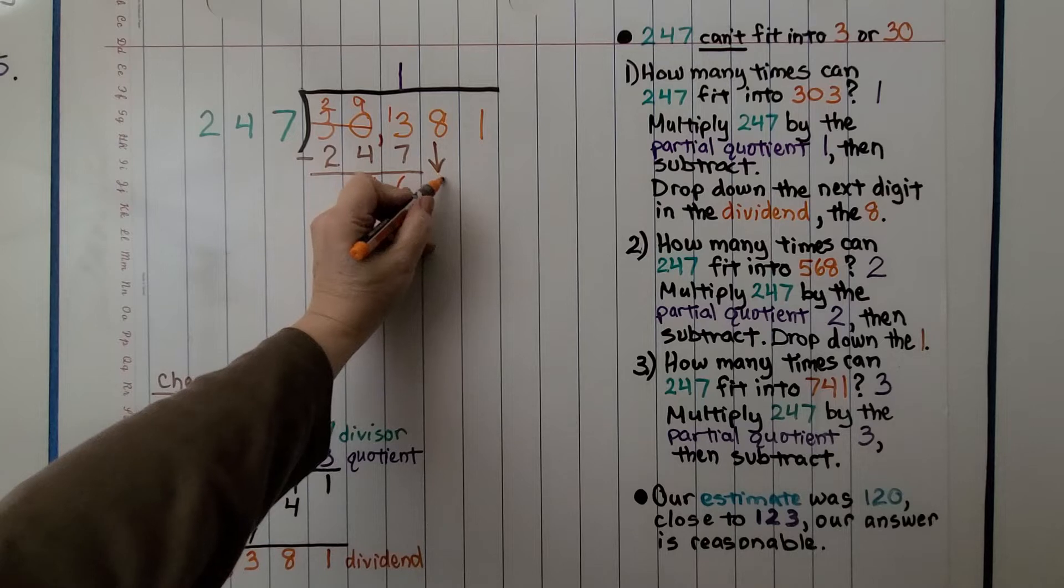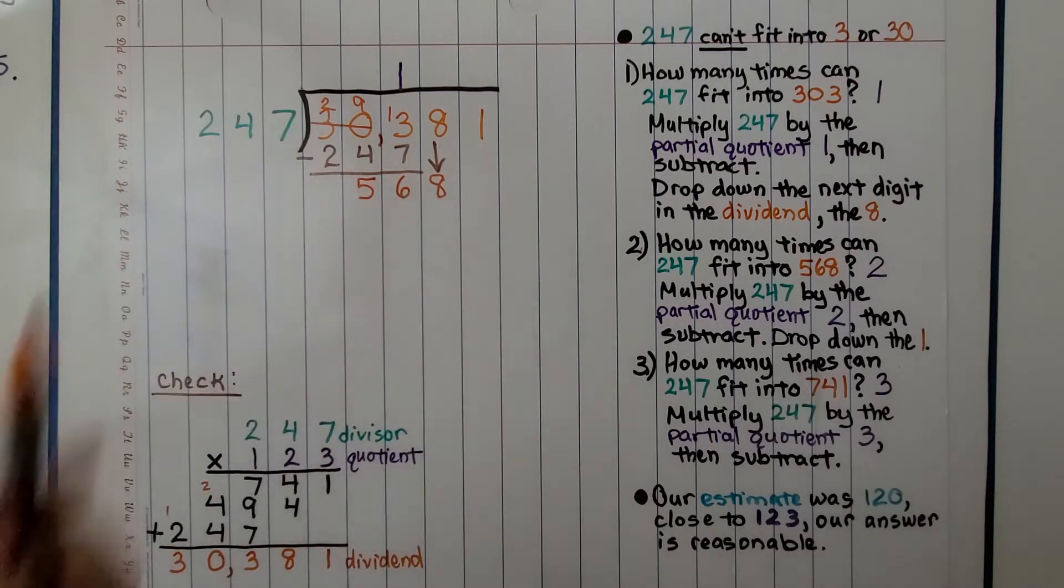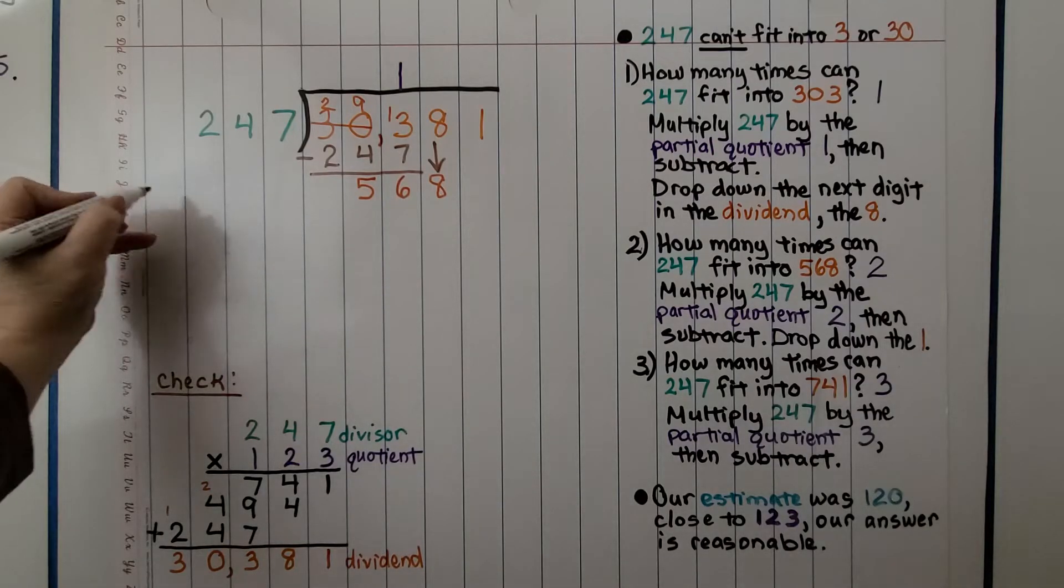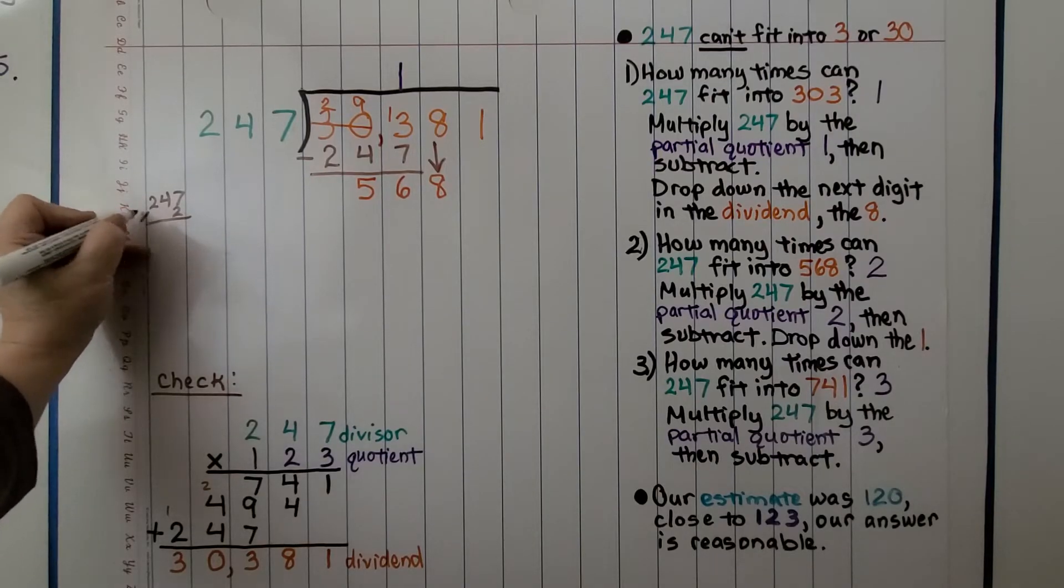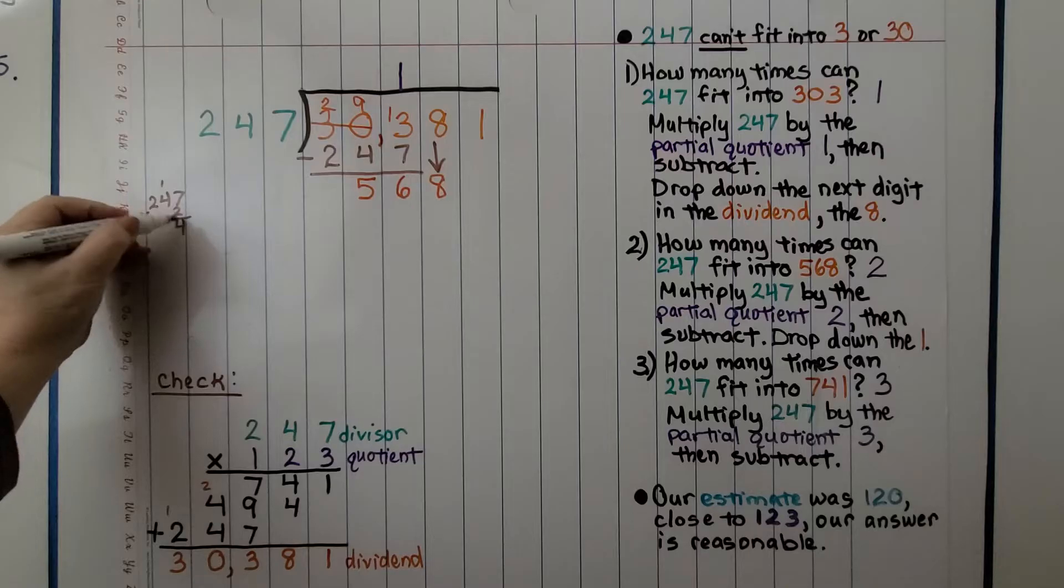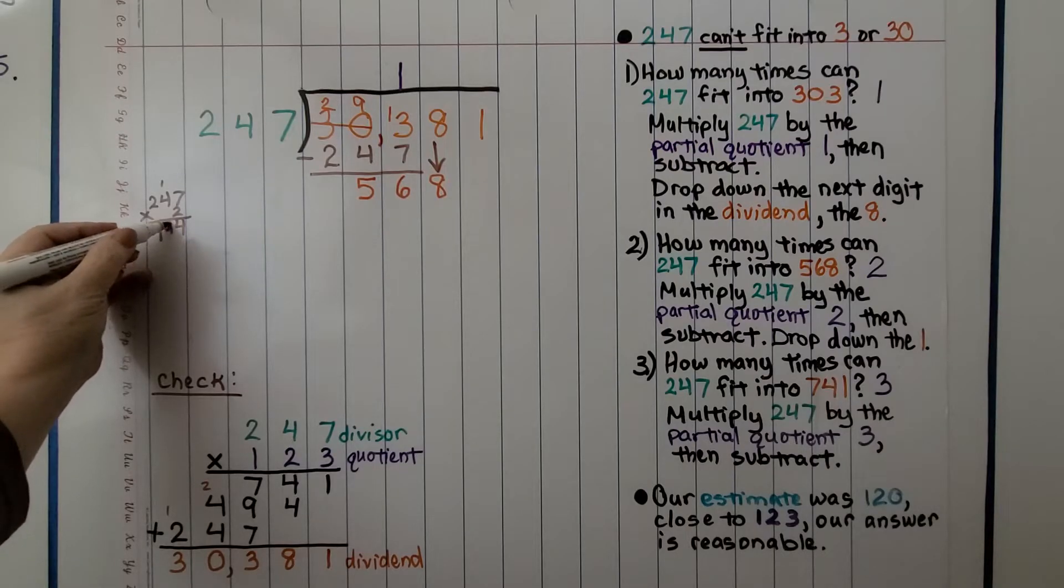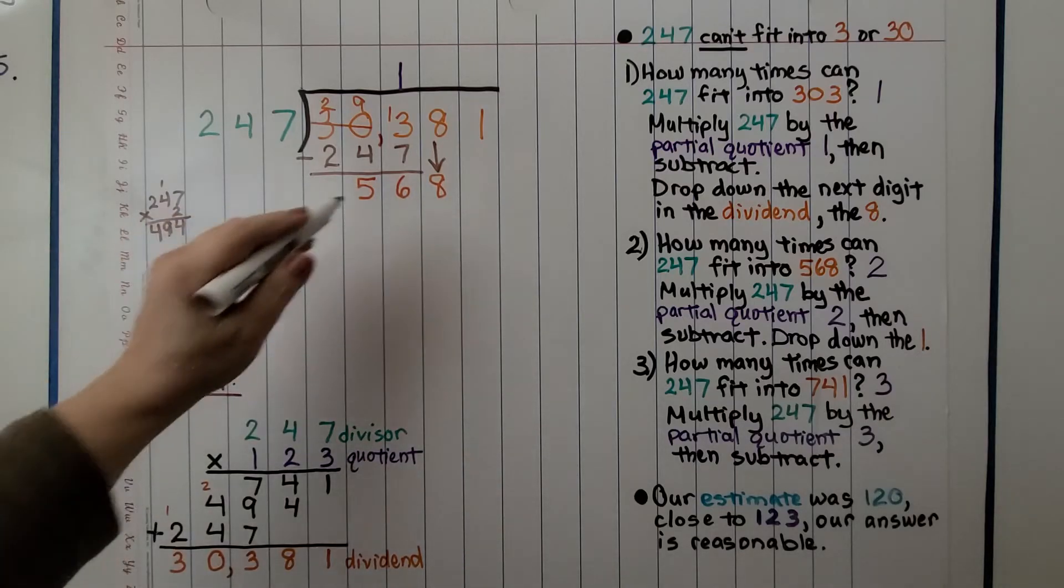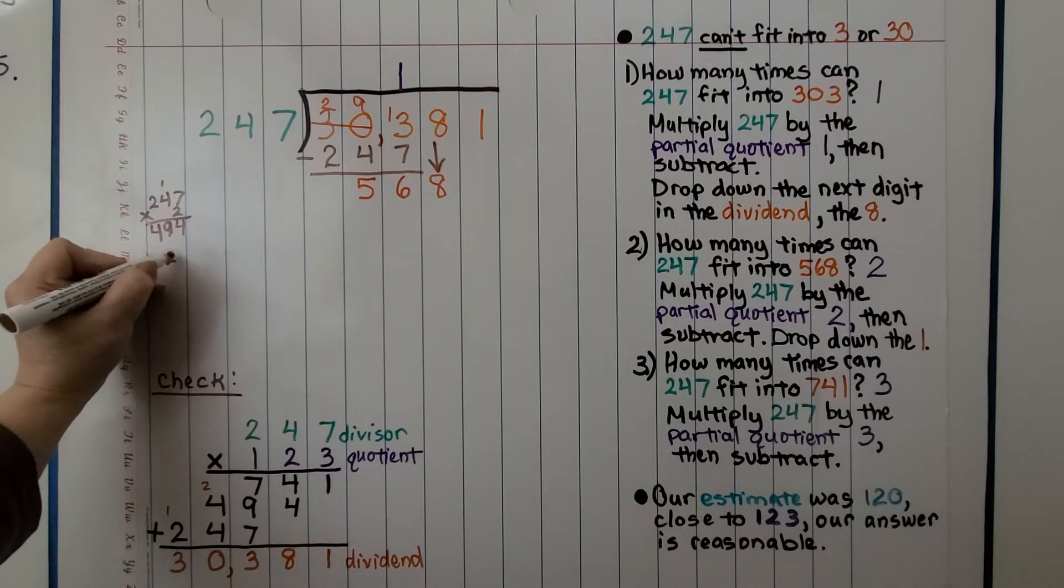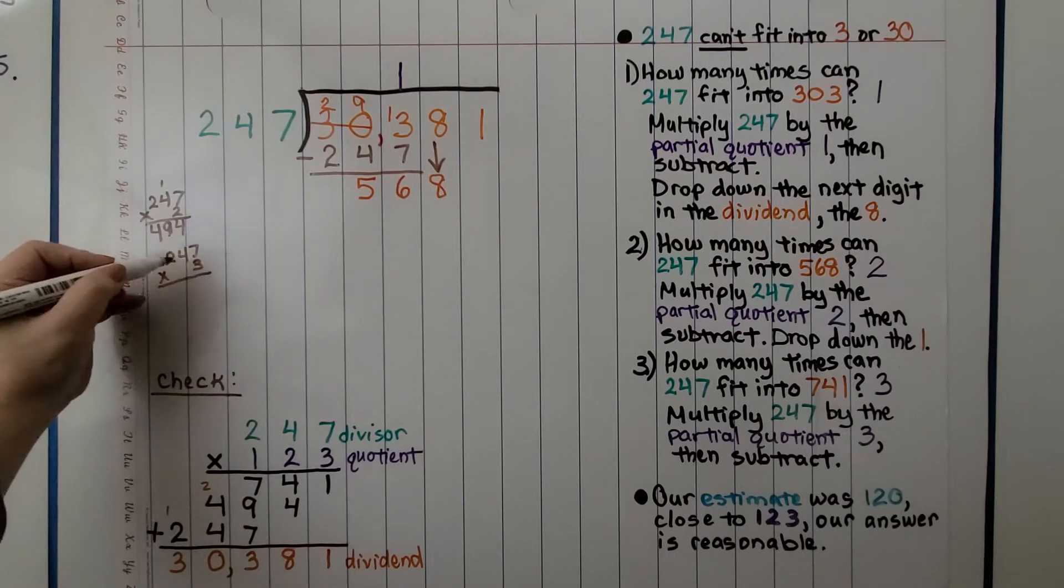Now we have 568, and we ask ourselves, how many times can 247 fit into 568? We can do a little multiplication on the side. If we do it times 2, we get 494. If we do 247 times 3, that might be too much. 3 times 7 is 21, 3 times 4 is 12 plus 2 is 14. That's 741, that's too much.